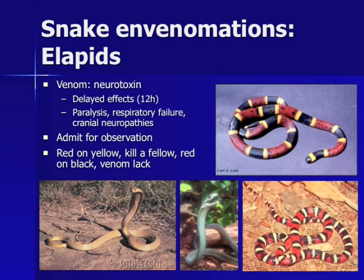The elapids represent the other major snake family native to the U.S. The coral snake is the most common elapid seen in the U.S. The king cobra and the black mamba are especially dangerous elapids found elsewhere in the world. Elapid venom contains a potent neurotoxin which can cause delayed effects. Symptoms can be absent for up to 12 hours after the initial bite. The neurotoxic venom causes paralysis, respiratory failure from diaphragmatic weakness, and cranial neuropathies. All patients with elapid bites should be admitted to monitor for delayed neurotoxic effects.